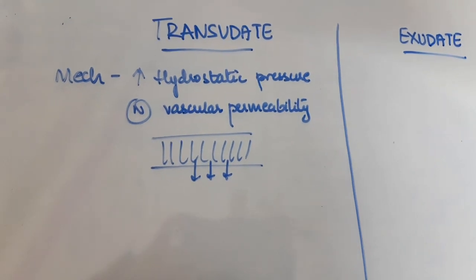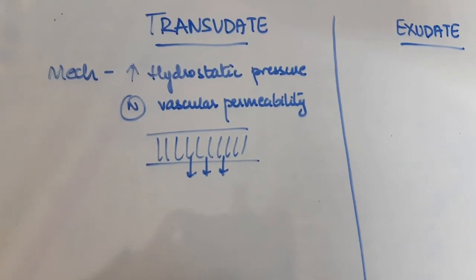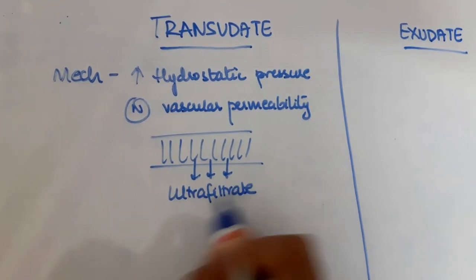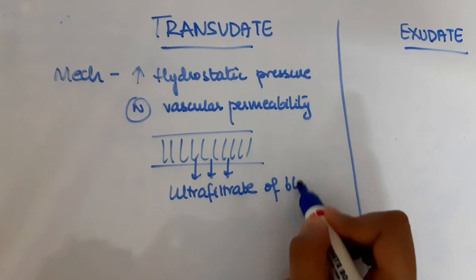So, this fluid is pushed out of the blood vessel due to an increase in the hydrostatic pressure. The fluid seen is actually an ultrafiltrate of blood.